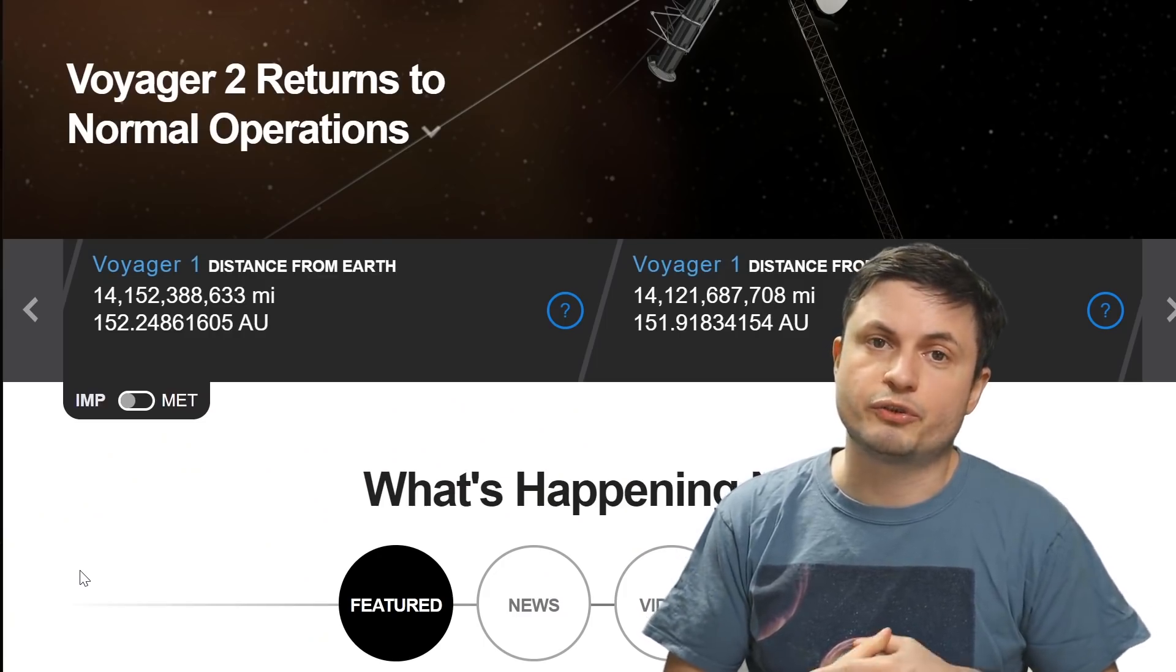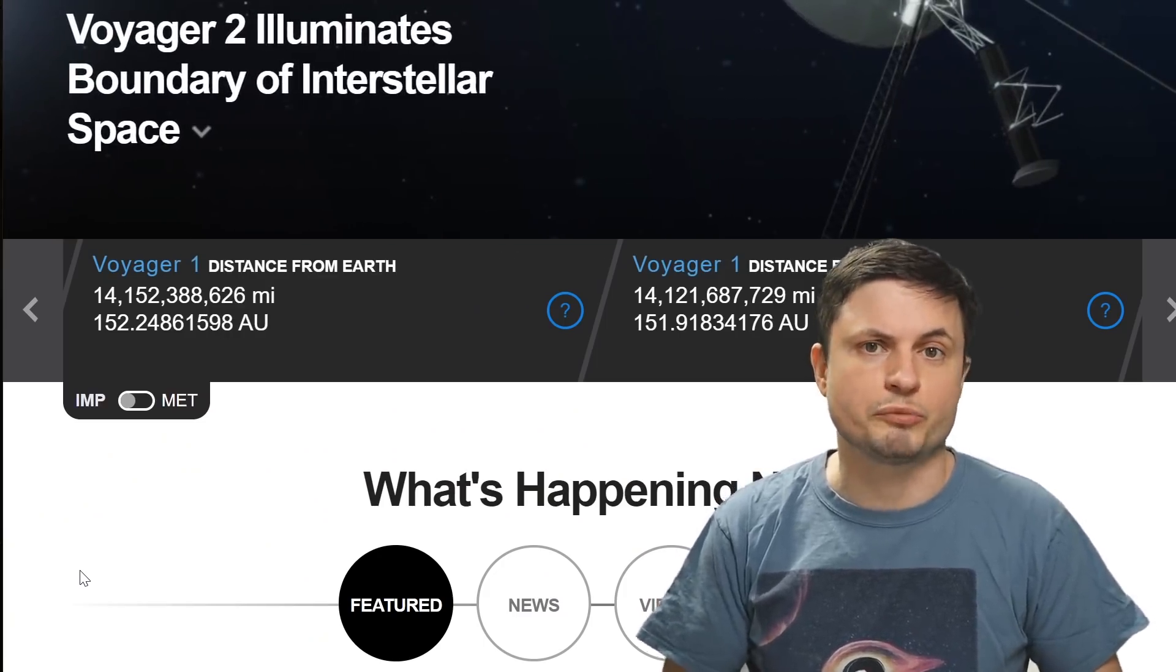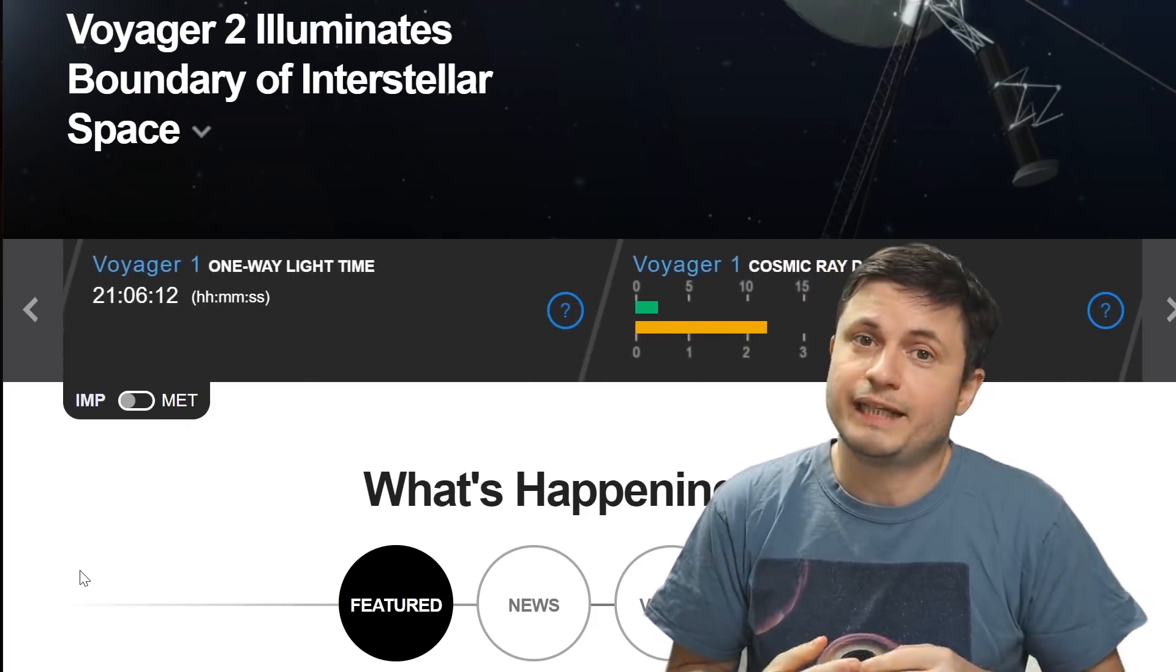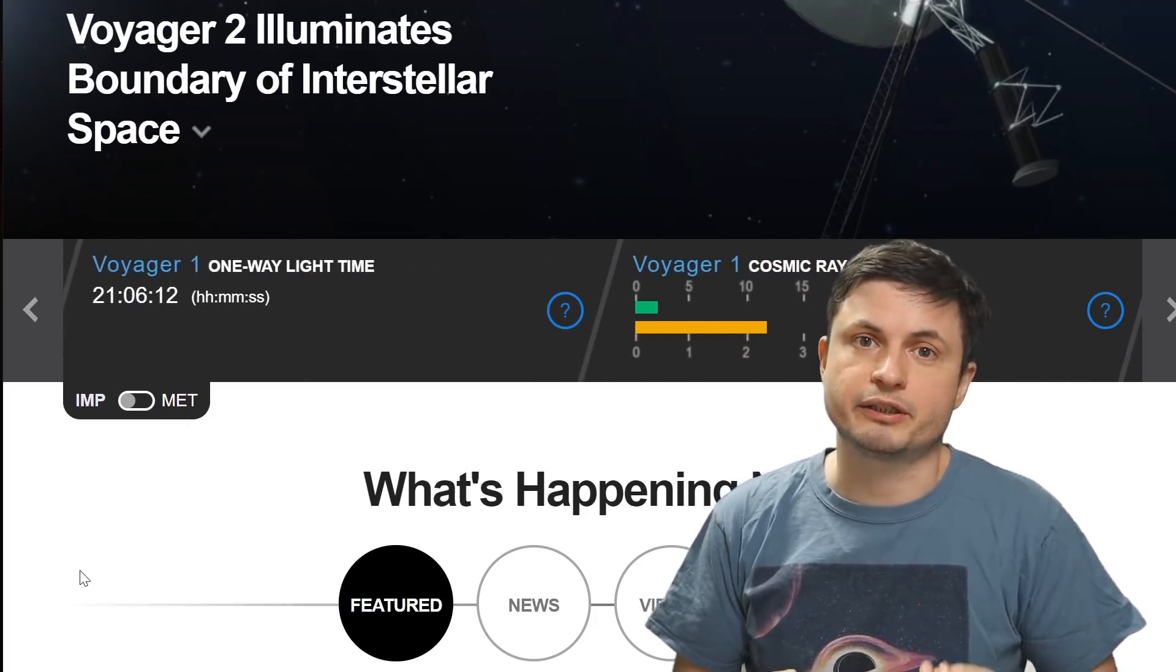But the current distance of Voyager 1 is 152 astronomical units, so it's already farther away. We can't really see it, but we can still hear it communicate with us.